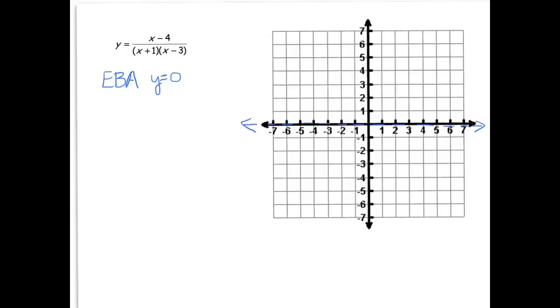The next thing I like to do is look at discontinuities. So notice that the factors in the numerator and the denominator don't have any similarities. So we know that there are no holes, and that means that the remaining factors in the denominator must be vertical asymptotes. So we have a vertical asymptote at x equals negative 1 and x equals positive 3. Let's put those on the graph.